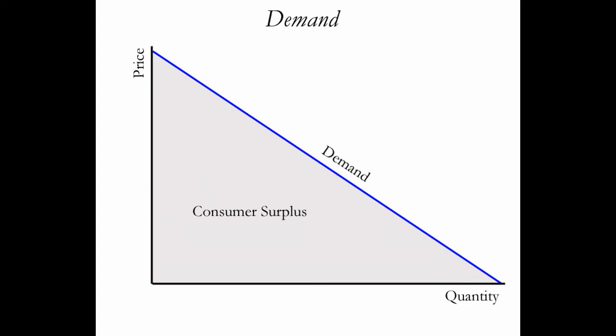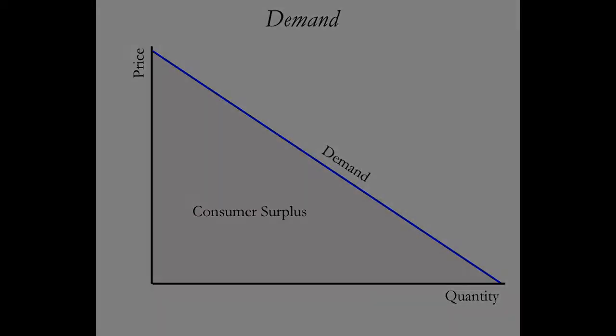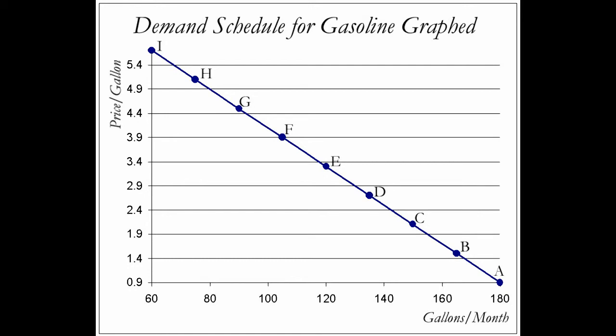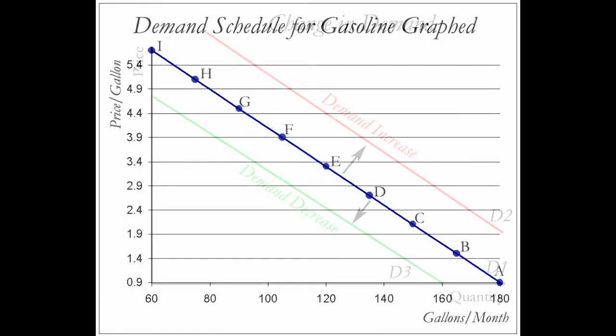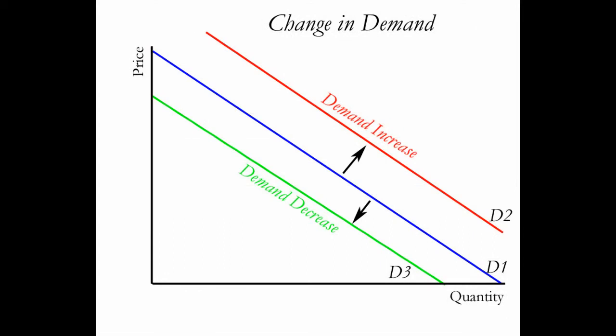There are several things that can change the location of the supply curve. A change in the location of the curve is known as a shift in demand, as opposed to a shift in the quantity demanded. Graphically, a shift in demand looks like this.